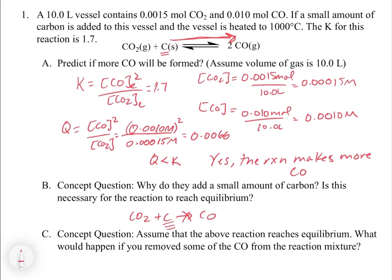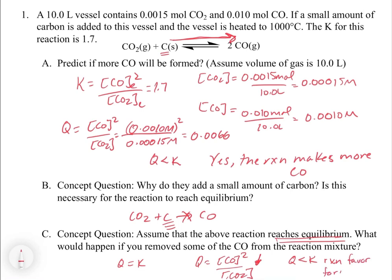Another concept question: assume the reaction reaches equilibrium, then some CO is removed. With Q = [CO]² / [CO₂], decreasing the concentration of CO causes Q to drop below K. The reaction then favors the forward direction again to produce more CO and restore equilibrium. This illustrates how adding or removing products or reactants shifts the Q-to-K balance — which is what we'll explore further in the next video.